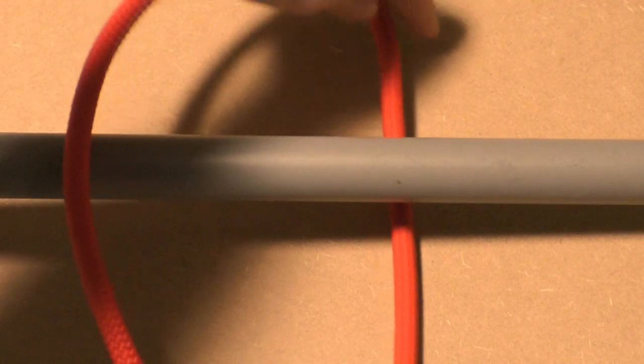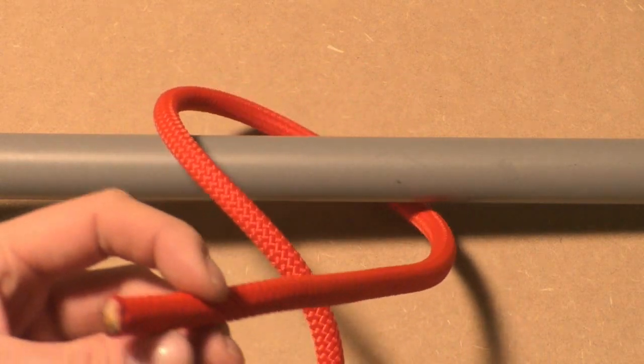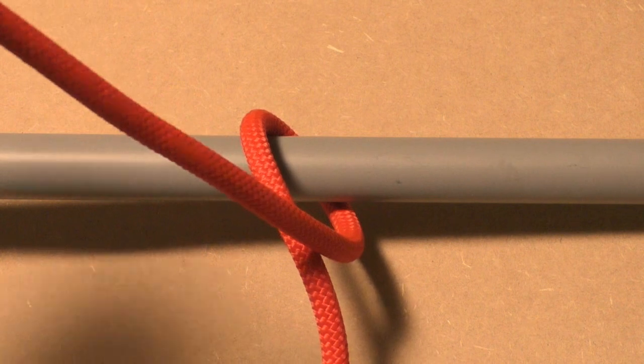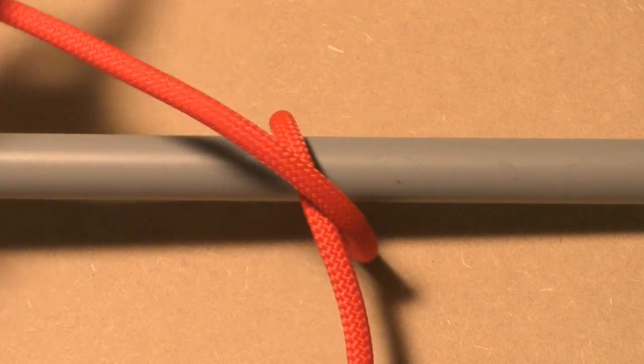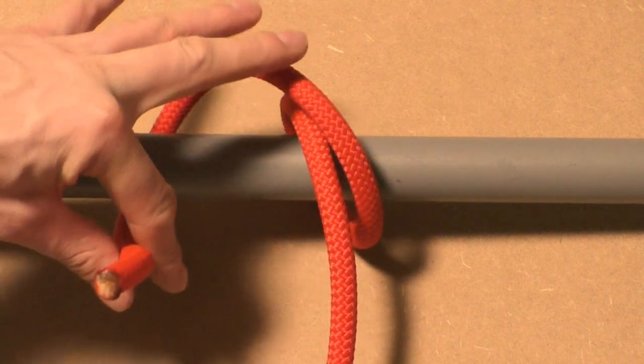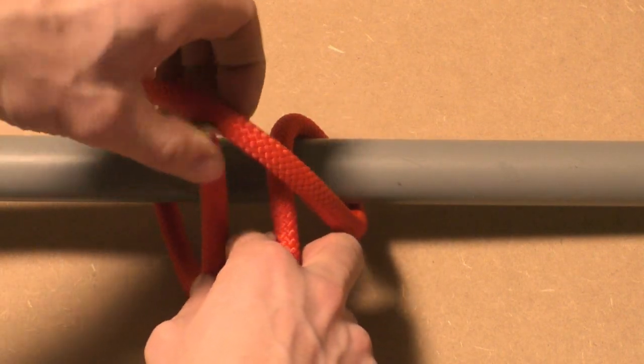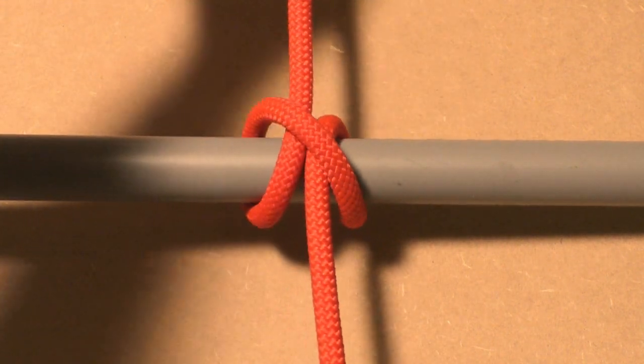Okay, let's tie the knot. Lead the working end of the line around the target object. In our example we use a piece of tube. Then cross off the standing part of the rope and go around the tube again. Now lead the working end of the line underneath the last wrap as shown and tighten the knot.